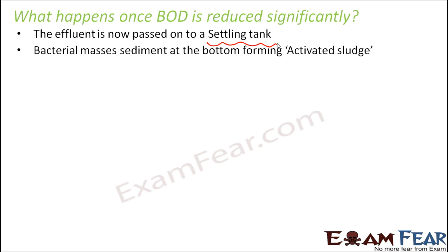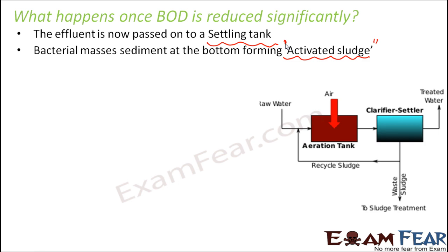The settling of aerobic microbes at the bottom forms the activated sludge. We used the term sludge earlier while talking about the primary treatment, where solid impurities settling at the bottom are called sludge. Here also it is a solid impurity at the bottom, called activated sludge because it contains the aerobic microorganisms. Once the aerobic microorganisms have settled at the bottom, you will have the activated sludge at the bottom and clear water on top. The clear water coming out of this is now clean water which has got rid of all impurities.